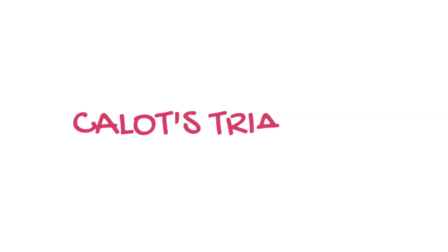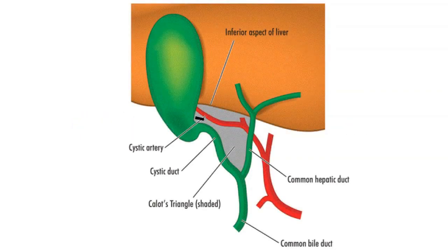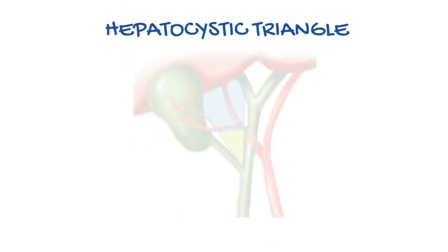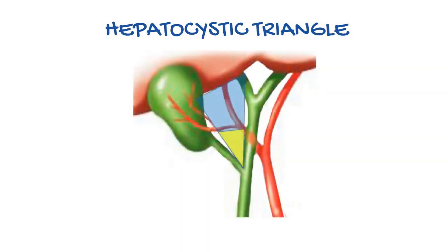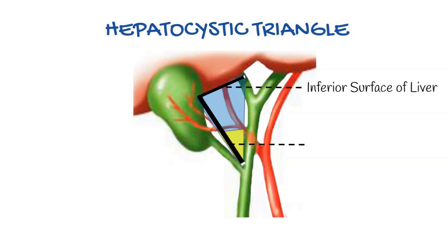Now let's enter the abdomen with Calot's triangle, bounded superiorly by the cystic artery, laterally by the cystic duct, and medially by the common hepatic duct. But now it has been replaced by the hepatocystic triangle, whose superior boundary is the inferior surface of the liver, laterally by the cystic duct, and medially by the common hepatic duct.